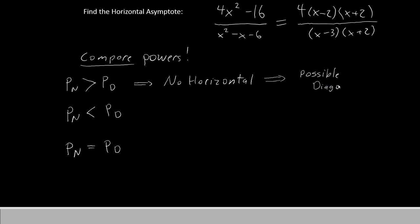It is possible that you could have a diagonal asymptote. We won't worry about that right now. I'll show you how to get that in a later episode. Let's move on to the next possibility. If the power in the numerator is less than the power in the denominator, you will have a horizontal asymptote, and it will automatically be at y equals zero. It will just be a horizontal dotted line passing through y equals zero.